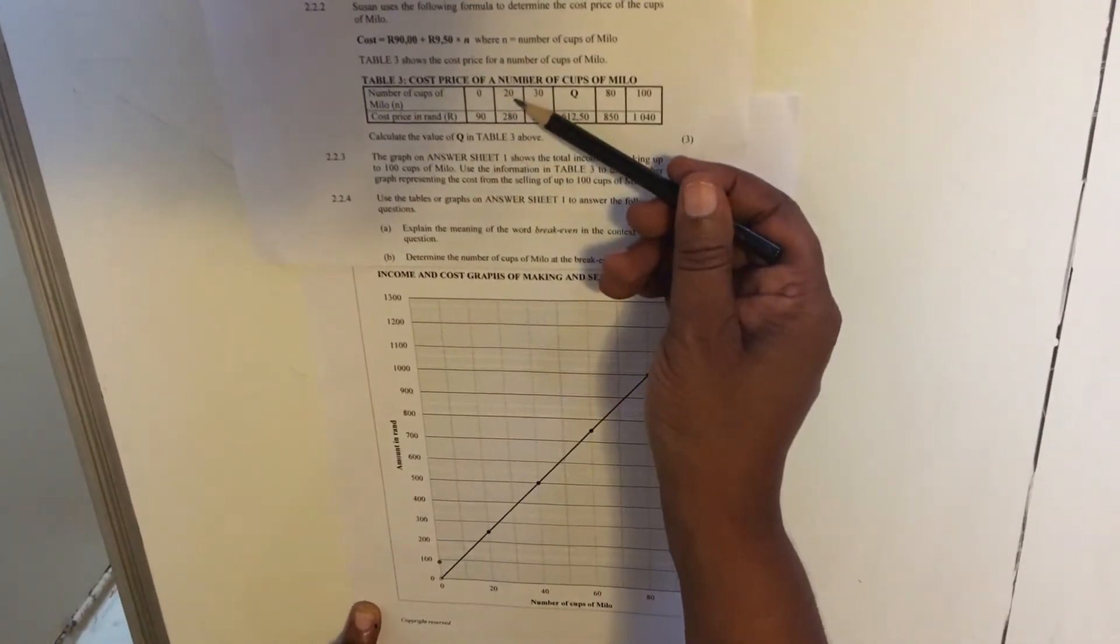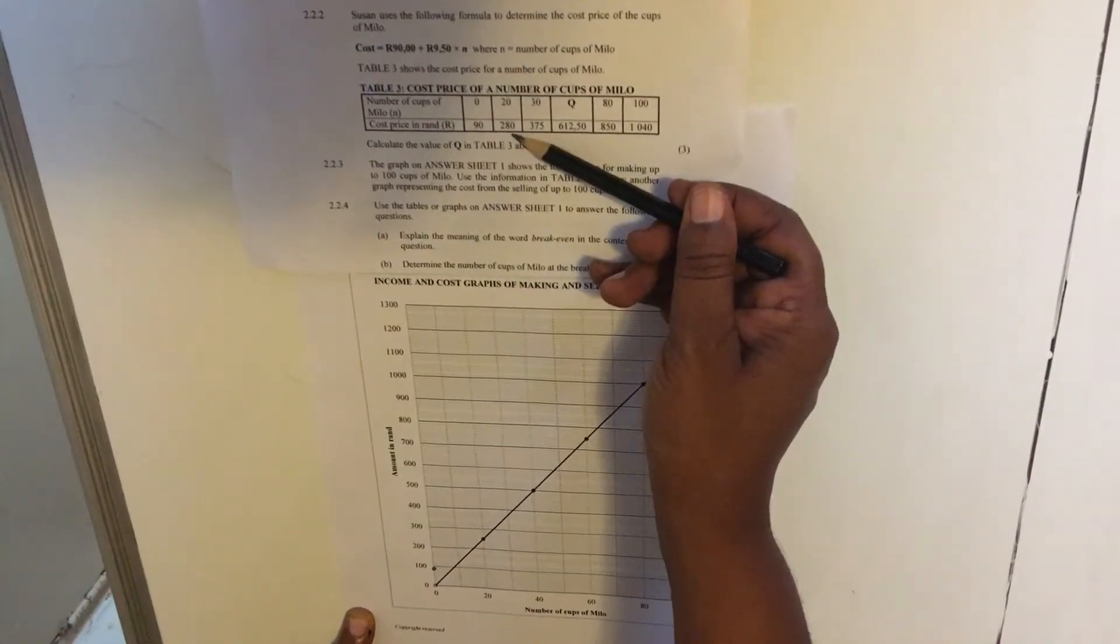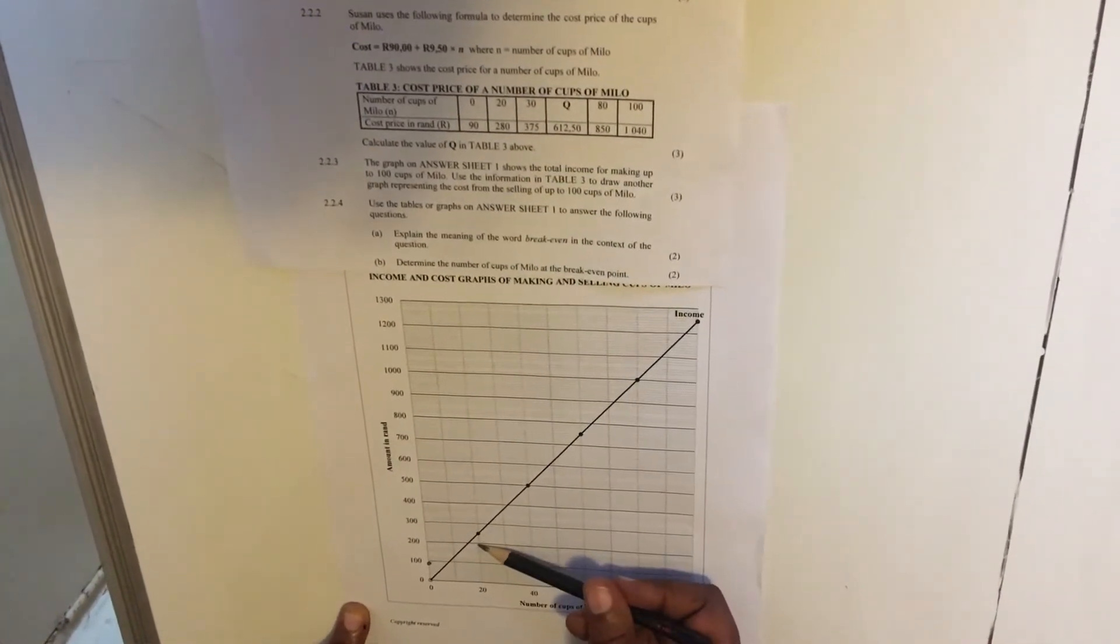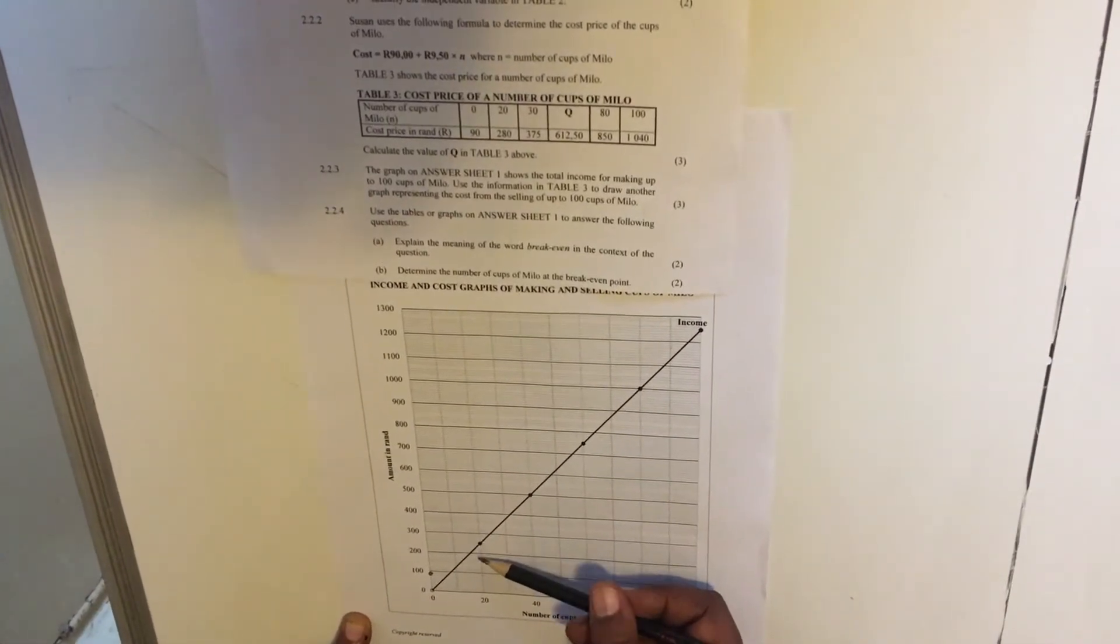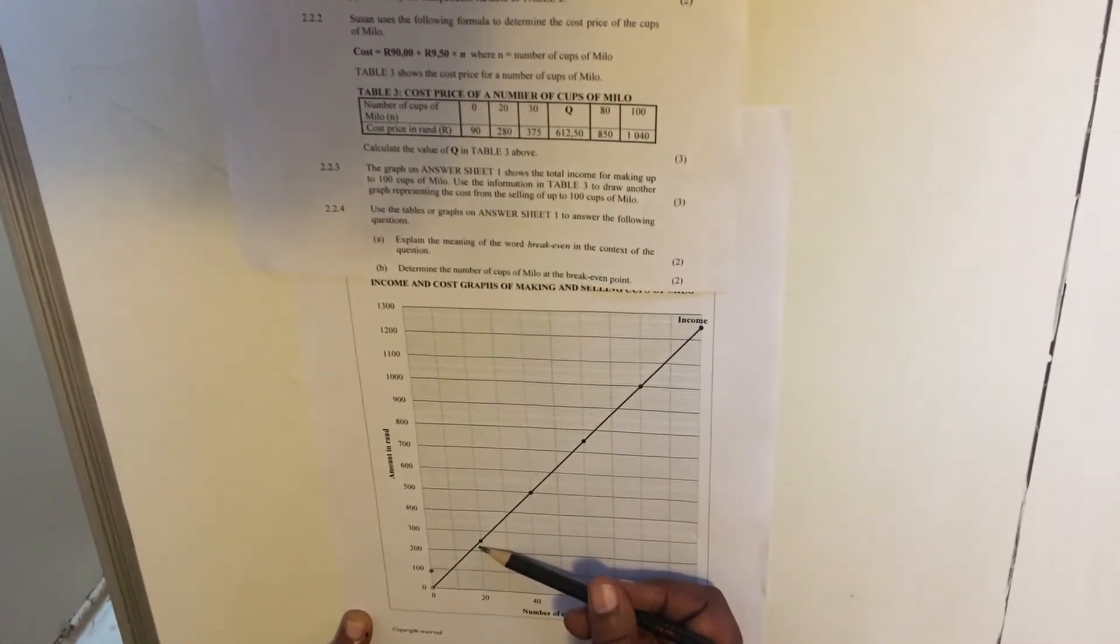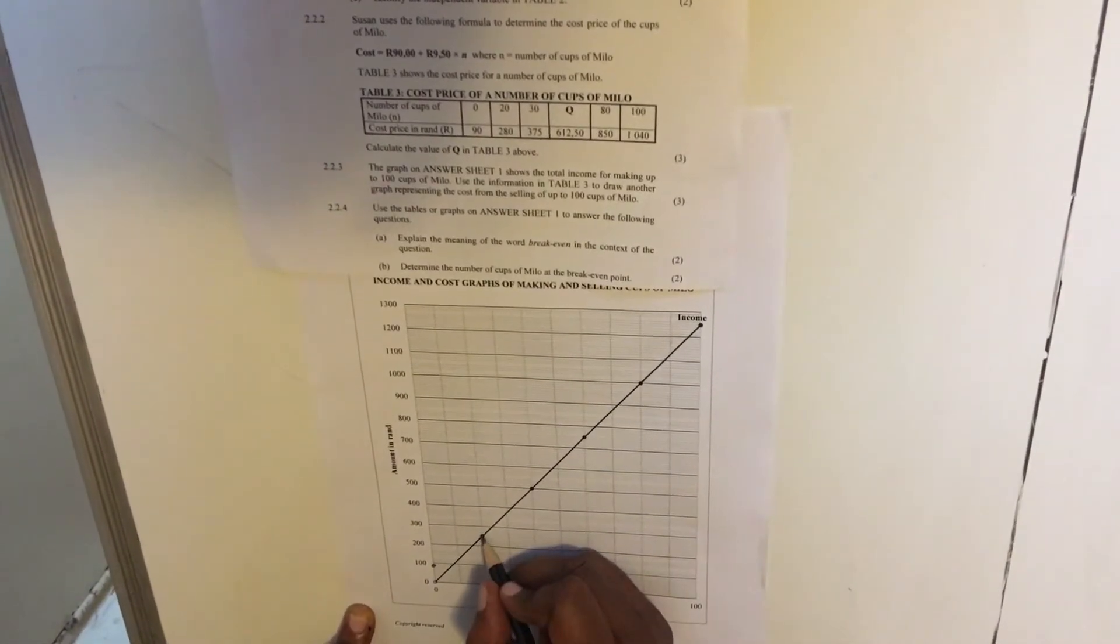The next one, when I have 20 cups, using 20 cups is gonna cost me R280. So 20 cups is 200, 200, 210, 20, 30, or 200, 2, 4, 6, 8, R280. It's here. It's 80. It's here. It's here.